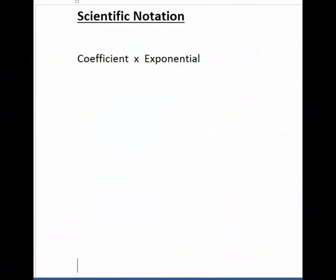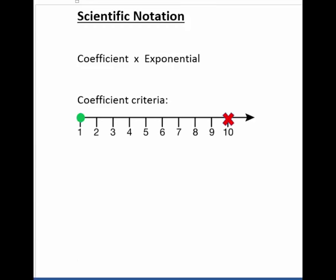Now let's take a look at the format of scientific notation and some examples. There's a coefficient, which is multiplied by the exponential. The coefficient needs to meet a specific criteria: it can be equal to 1, but it must be less than 10. So simply put, between 1 and 10, but it can equal 1.